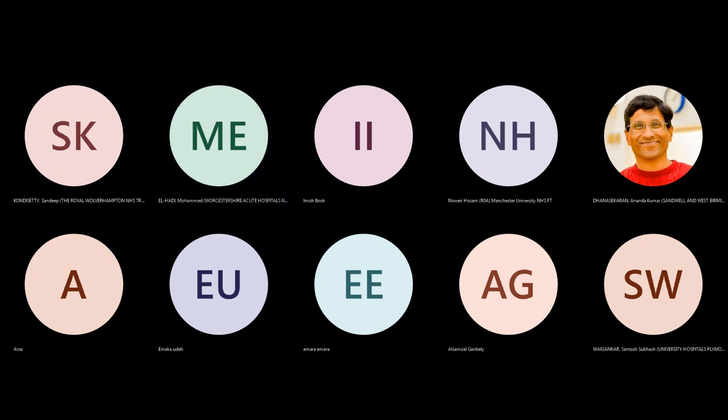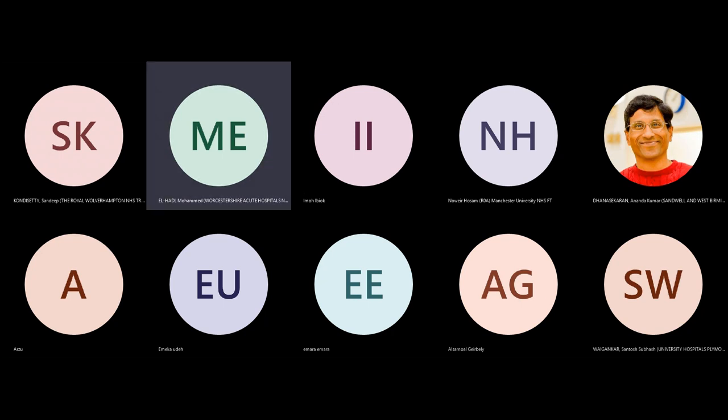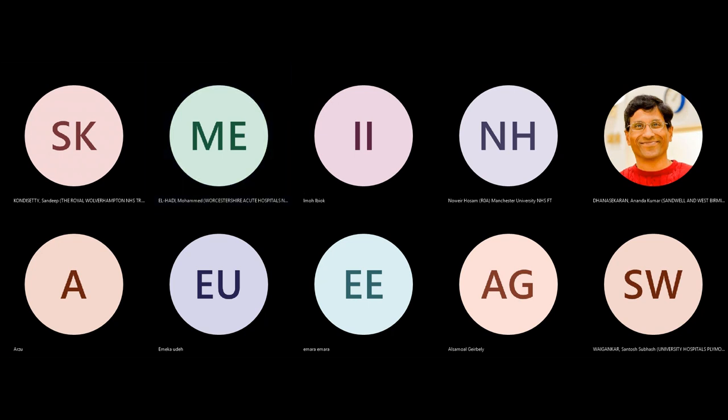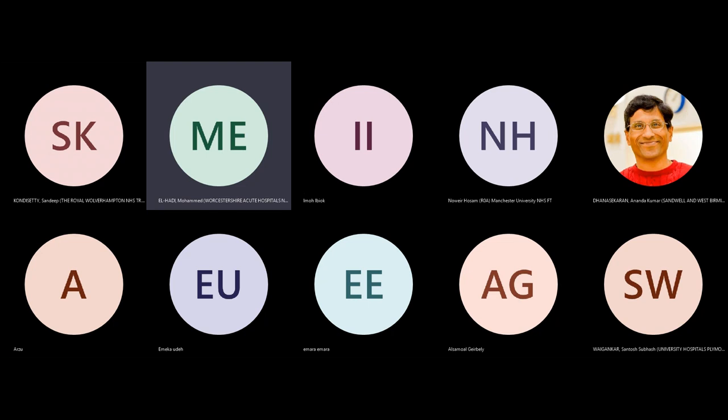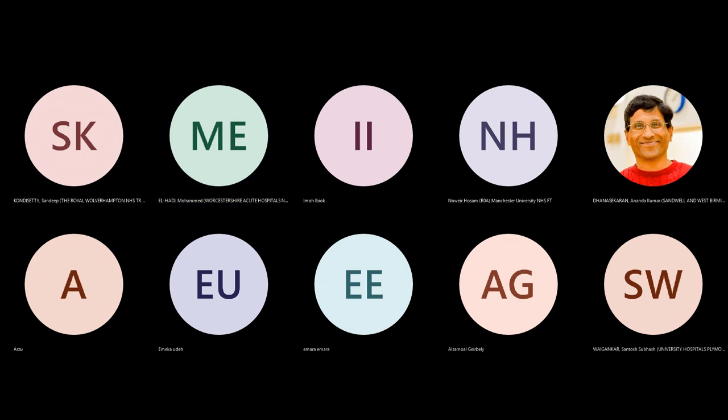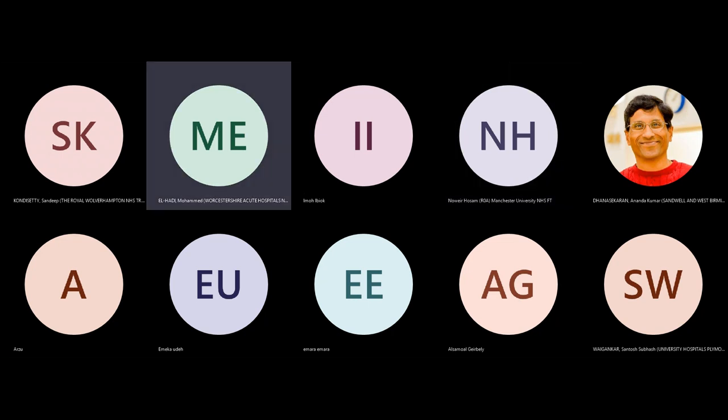You're on call. Your registrar told you that there is a young girl in her 30s coming with loin-groin abdominal pain. Sounds like a renal colic. Your registrar is very junior, SC3. He asks you what is the next step of assessing this lady?